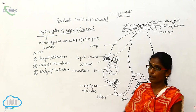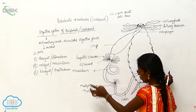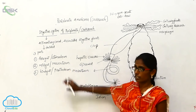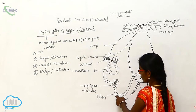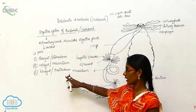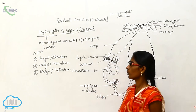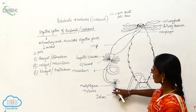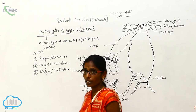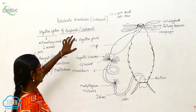From the mouth to the gizzard it is known as the foregut or stomodeum. From the mesenteron to the Malpighian tubules it is known as the mesenteron. And from the ileum to the rectum it is called the hindgut or proctodeum. These are the three parts of the alimentary canal.